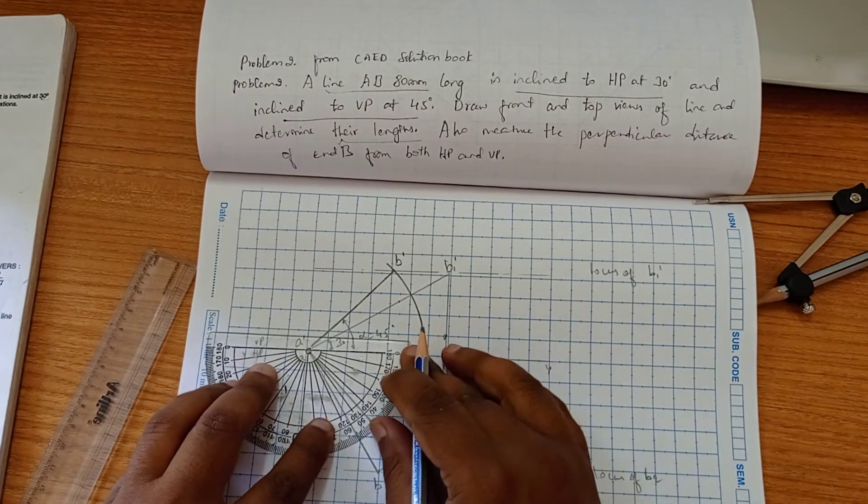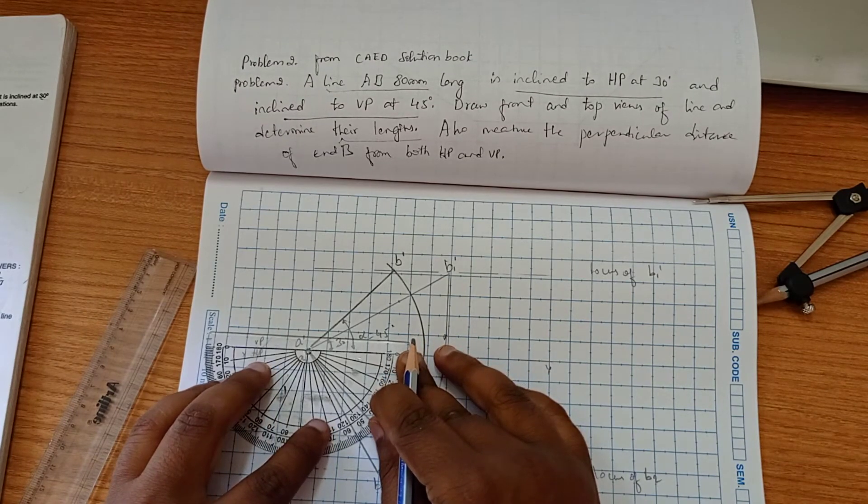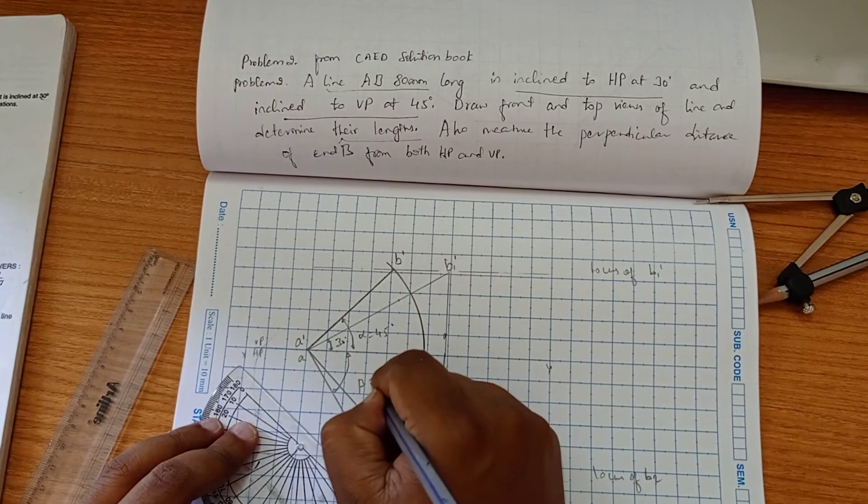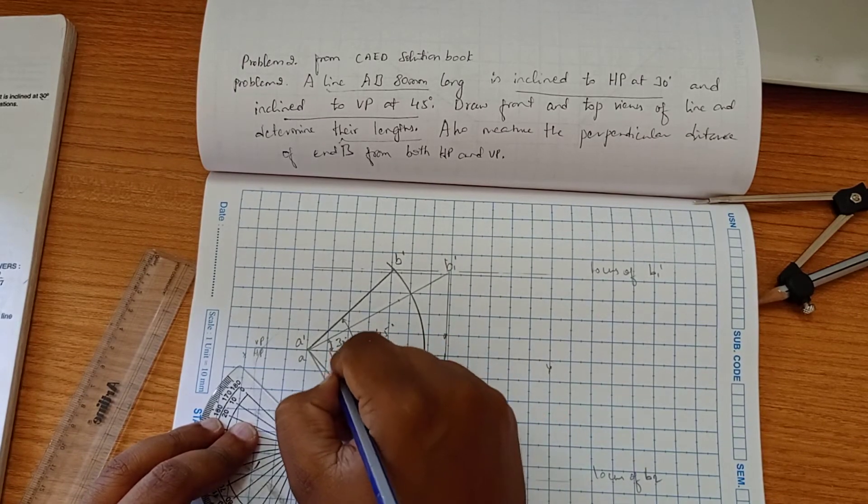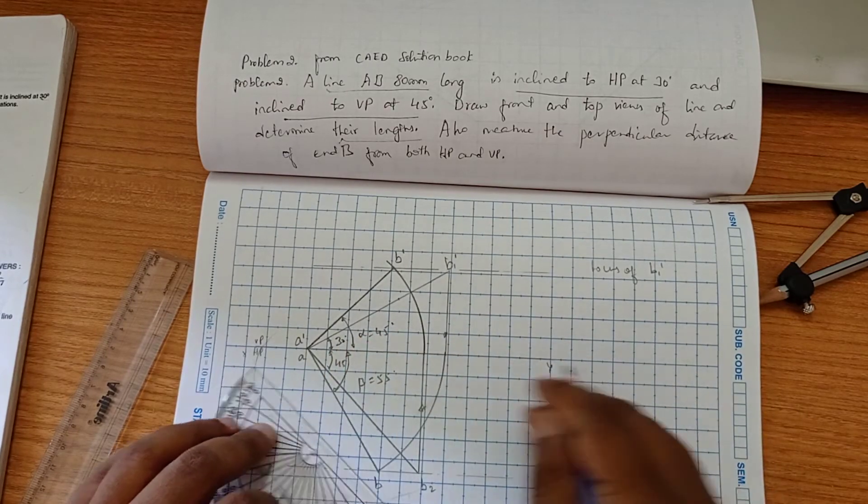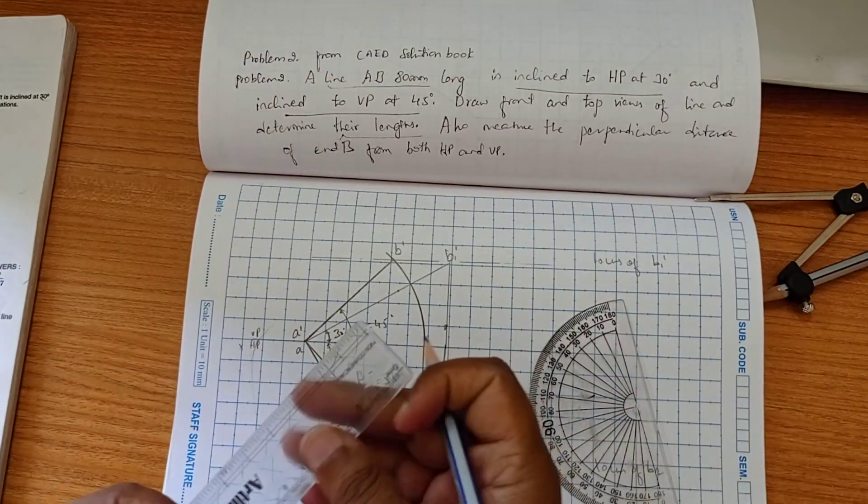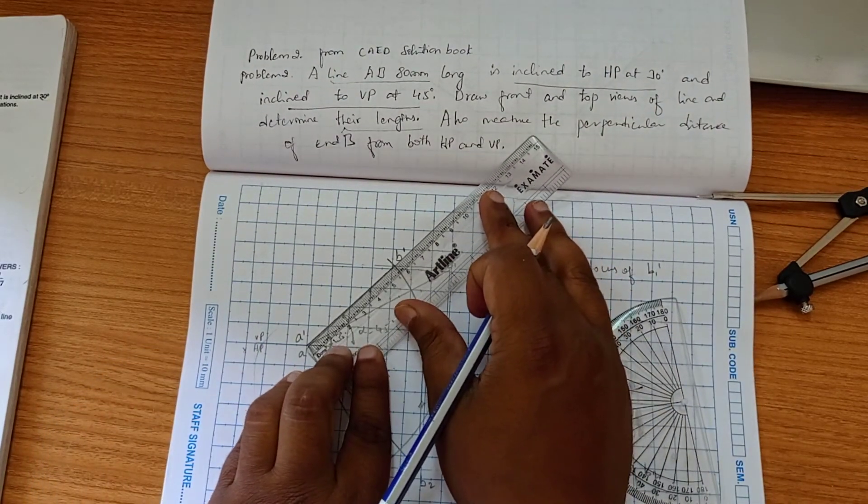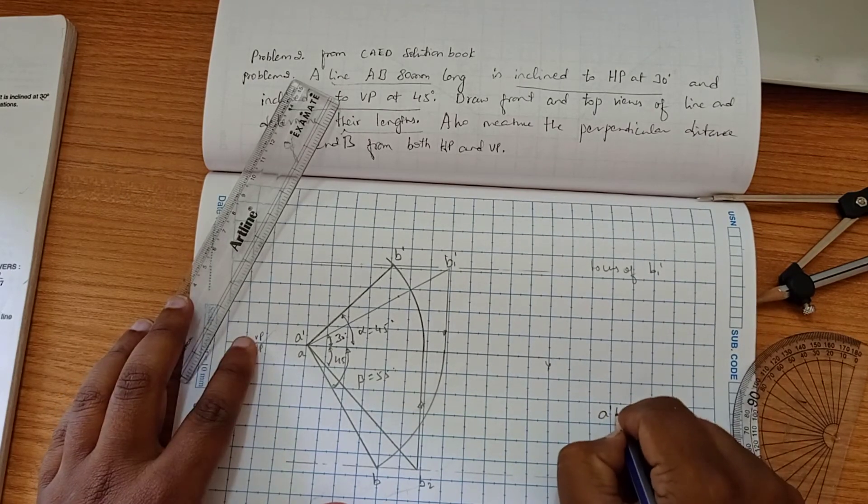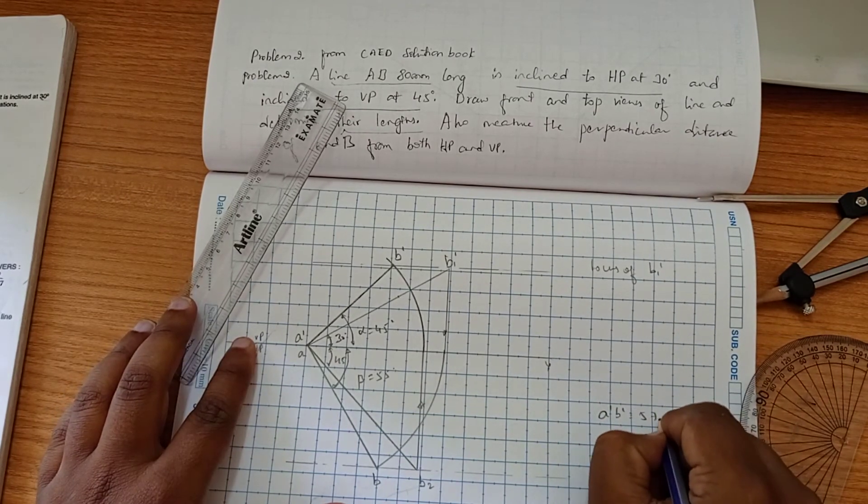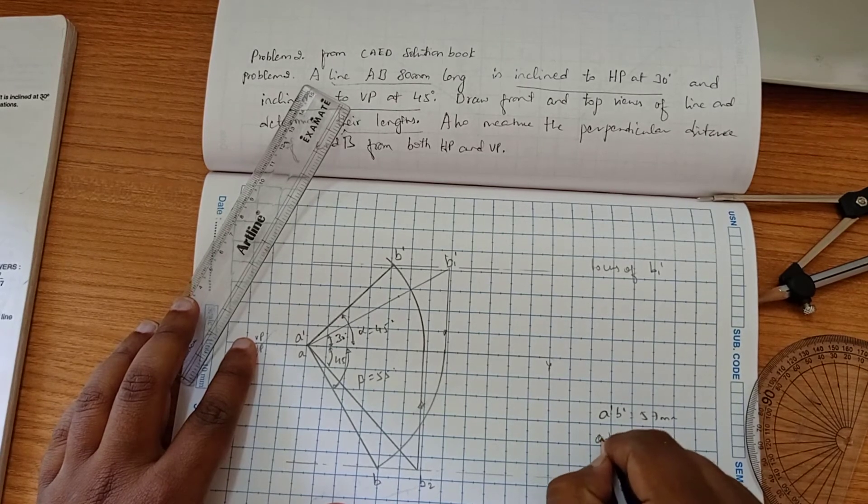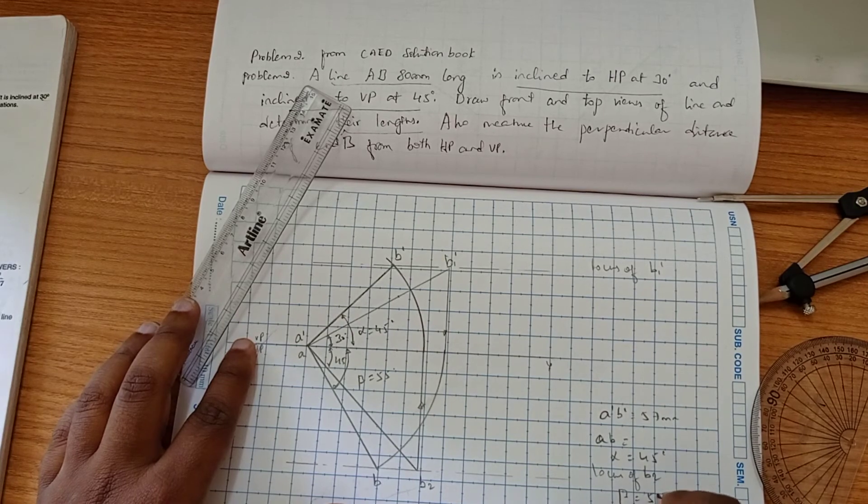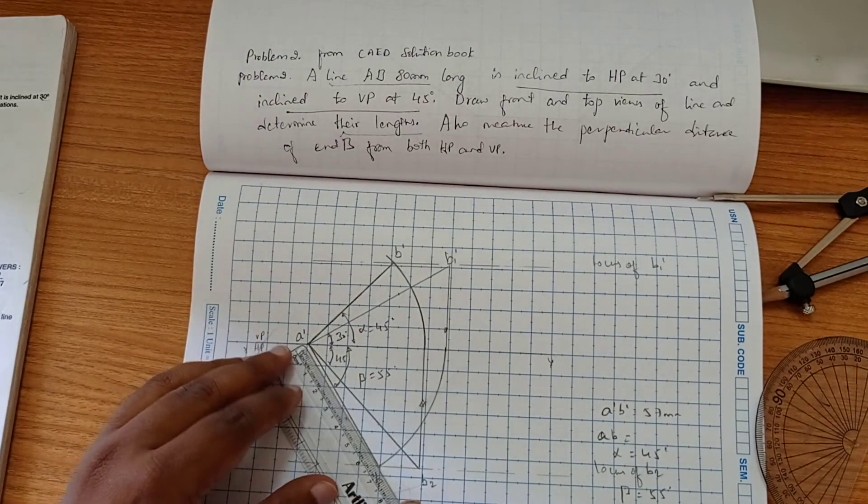This is beta - 50. And this is 45. We need to measure these lengths. This is around 57mm. So we will write here A'B' is 57mm. Alpha we are getting 45 degrees. Beta we are getting 55 degrees. AB length we have to measure.